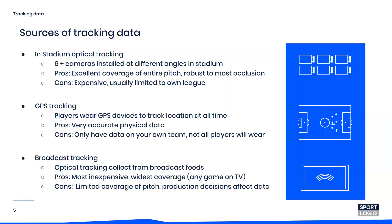The last type is broadcast tracking — essentially single-camera tracking from a tactical feed, wide angle lens, or the actual broadcast feed. The advantages are that it's by far the most inexpensive — all you need is the game to be televised — and you have the widest coverage in terms of leagues. Any game that's on TV, including historical games, can be processed. The downsides are that you don't get the whole pitch, and production decisions affect the data. For example, MLS broadcasts tend to be much more zoomed in than European broadcasts, so you get fewer players on screen at any one time.